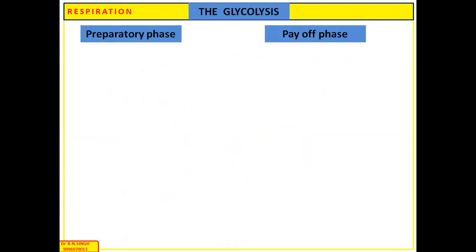The preparatory phase involves the consumption of two ATPs and the breaking down of the six-carbon molecule into two molecules of three-carbon-containing sugars. The preparatory phase is the passive phase of glycolysis. In the payoff phase, it involves oxidation and substrate-level phosphorylation, and it ends with the formation of two molecules of pyruvic acid.